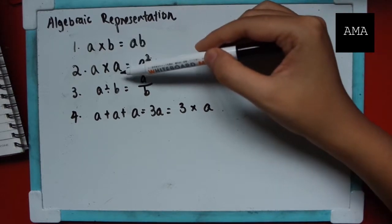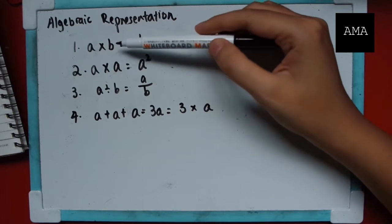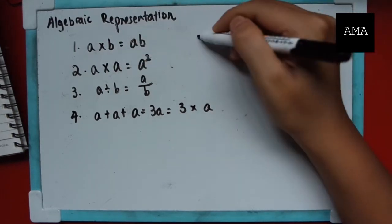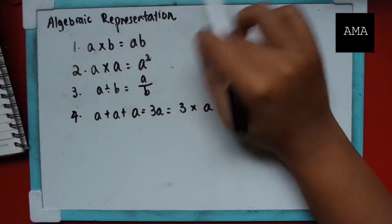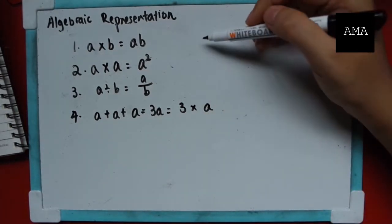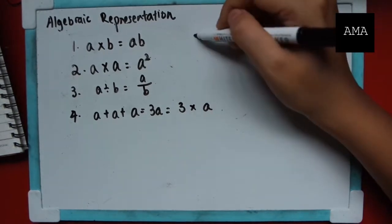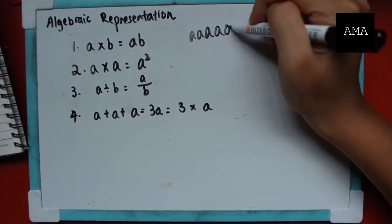Or like in the second point, we have a times a. So a times a is not aa. It doesn't work that way. Because, you can imagine if we have about a hundred of these, we would be writing forever: a, a, a.